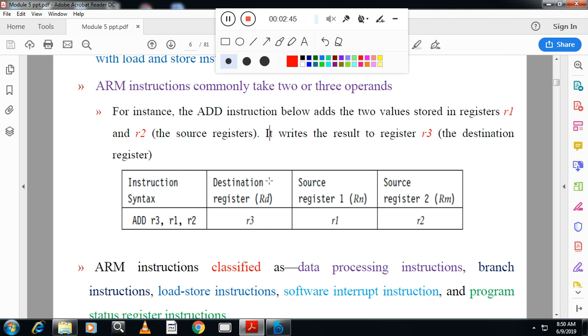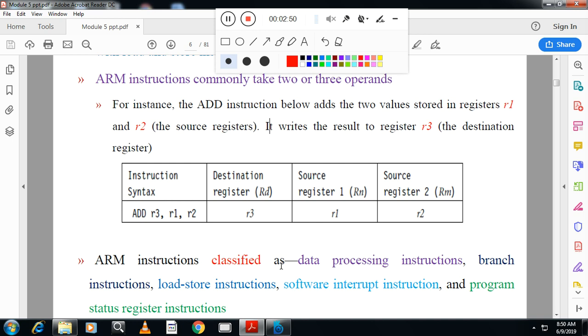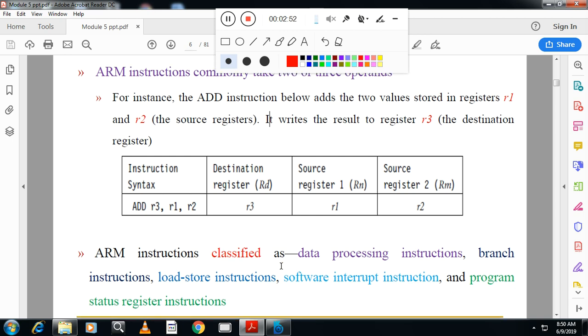ARM instructions are classified as data processing instructions, branch instructions, load instructions, software interrupt instructions, and program status register instructions. For example, in the exam, if they write the classification of ARM instructions and explain any two, then you have to remember first one the data processing instruction, branch instruction, load instruction, software interrupt instruction, and program status register instruction. These five main set of instructions. In that, data processing instruction itself contains subsets. You can see in the next slide.